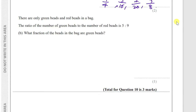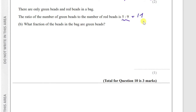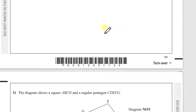Question 10 part (b): there are only green and red beads in a bag. The ratio of green to red is 5:9. Total ratio parts = 5 + 9 = 14. So 5 of the 14 beads are green. The fraction of beads that are green is 5/14.